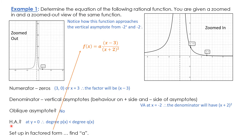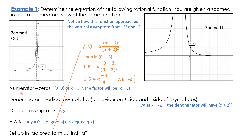To find A, we pick a point on the graph and we are going to use (0, 1.5), substituting that in for x and y. Doing a little bit of math and isolating for A: multiply both sides by 4 to get rid of the denominator, then divide both sides by negative 3, and we get A equals negative 2. So here's our equation of the function in factored form — that's the factored form of the equation of the graph.